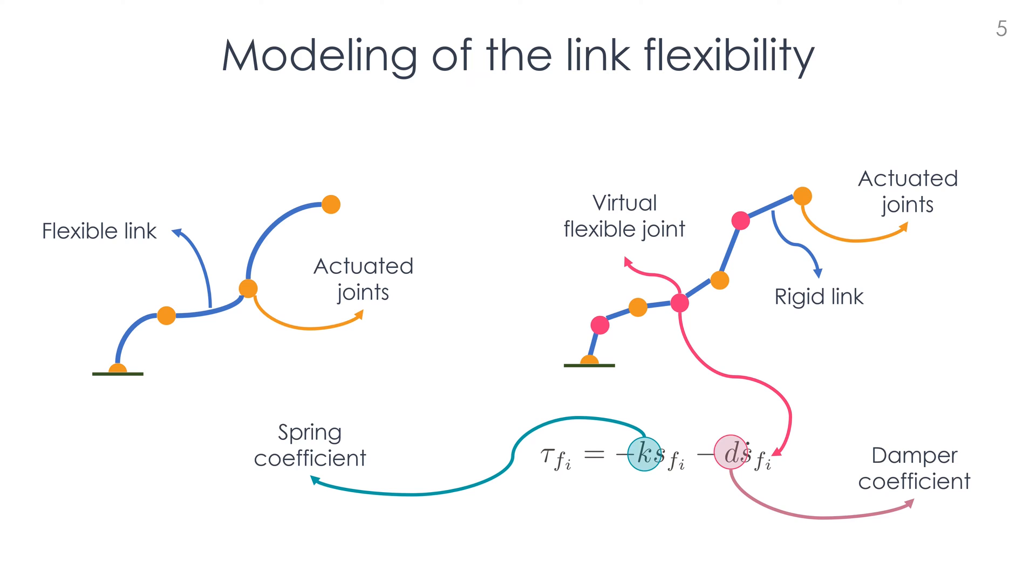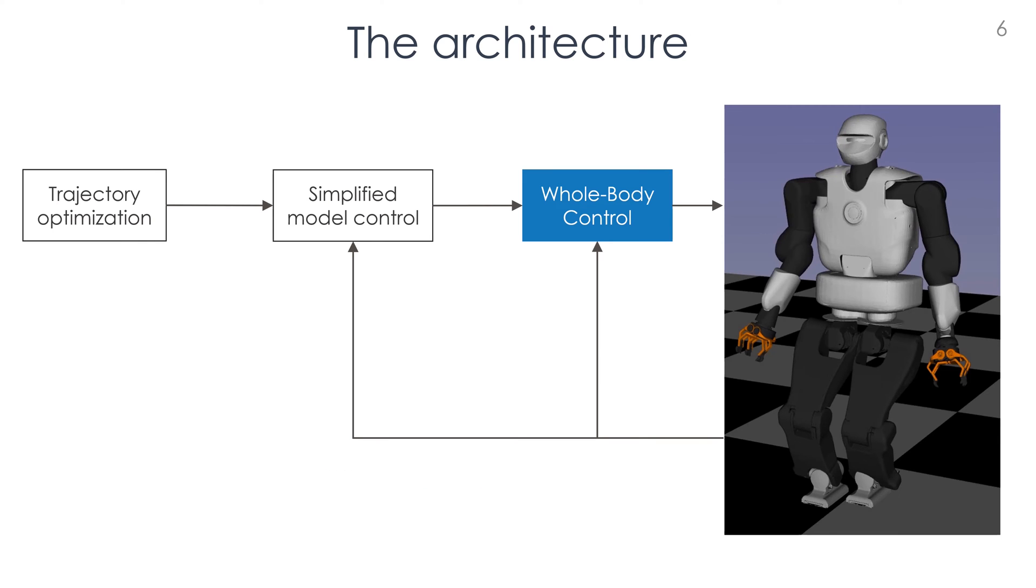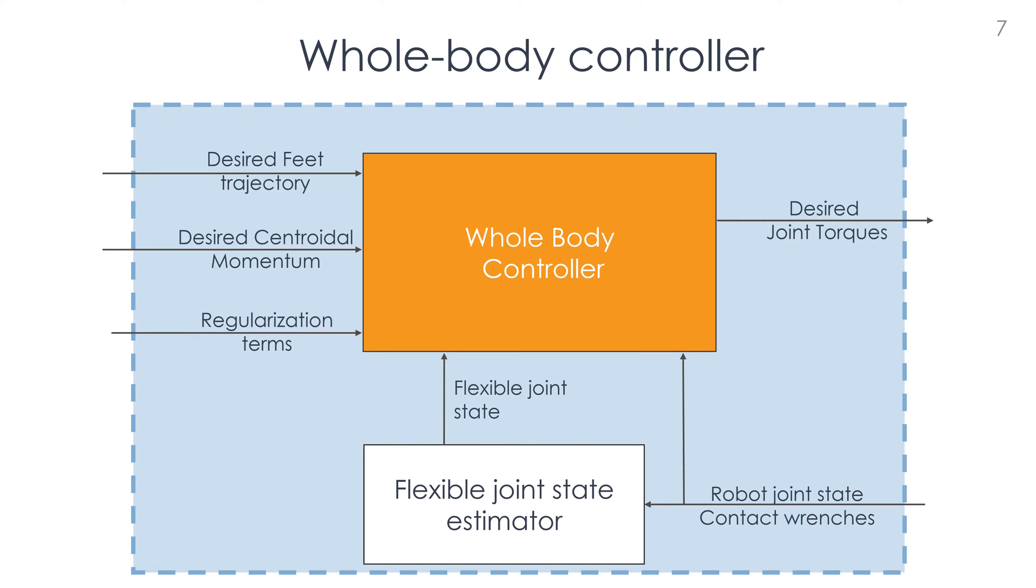Let's now consider a cascade controller architecture. We focus on the inner layer, which is in charge to generate the desired joint torque, considering the robot state, robot model, and the contact dynamics. The controller is composed by two blocks: a whole-body controller itself, and a joint state estimator.